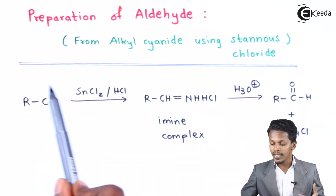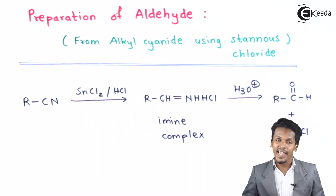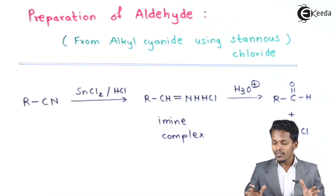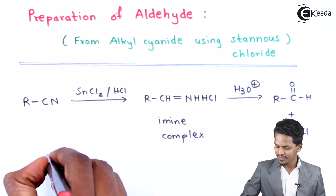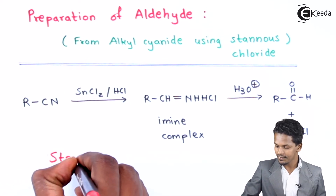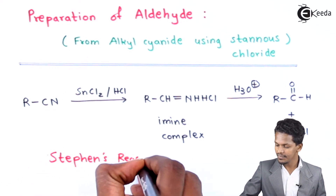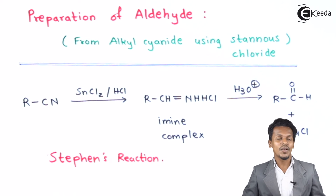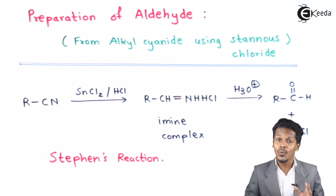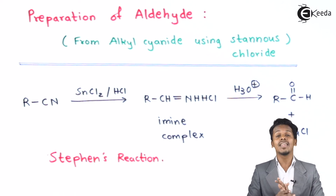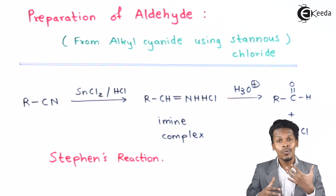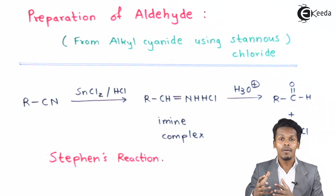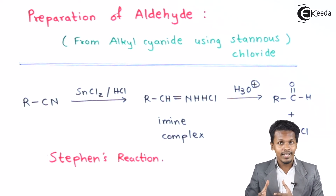This is done using SnCl₂ along with HCl. This kind of reaction is basically known as Stephen's reaction. This reaction only gives aldehydes — we cannot prepare ketones using this method. So Stephen's reaction only involves the formation of an aldehyde from an alkyl cyanide.